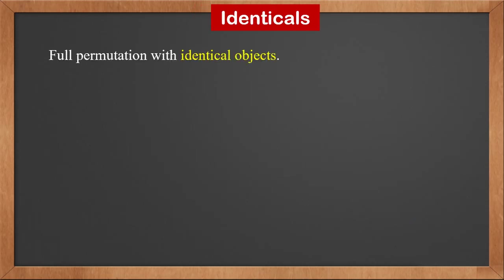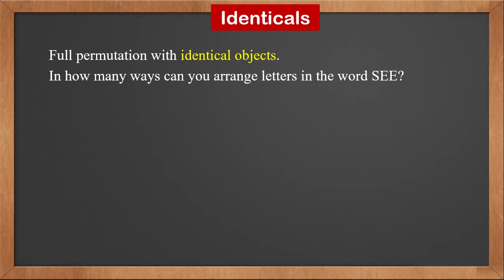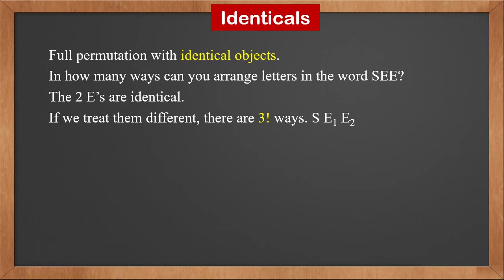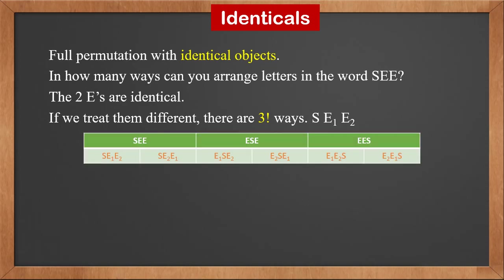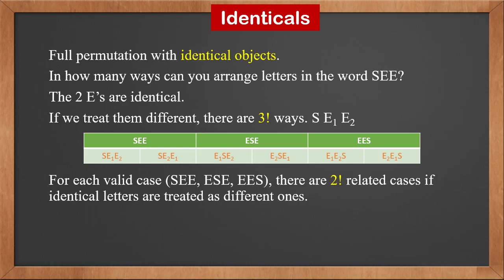Now let's study full permutation with identical objects. In how many ways can you arrange letters in the word 'SEE'? The two E's are identical. If we treat them as different, there are 3! ways. Labeling them E1 and E2, there are only three valid cases: SEE, ESE, and EES. For each valid case, if we treat the two E's as different, we can arrange them freely — that is 2! cases. Therefore, for each valid case, there are 2! related cases when identical letters are treated as different. So the solution is 3! ÷ 2! = 3.